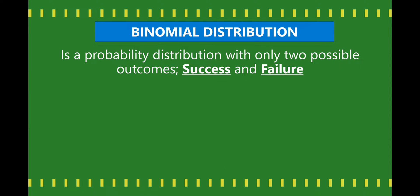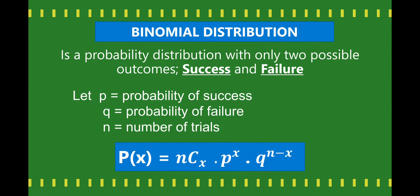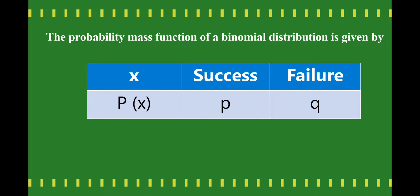Binomial distribution is a probability distribution with only two possible outcomes: success and failure. We let P be the probability of success, Q be the probability of failure, and n be the number of trials. The binomial distribution formula is: P(x) = combination of n and x, times P raised to x, times Q raised to n minus x. The probability mass function has x for success and failure, and P and Q, wherein the sum of P and Q equals 1, from the properties of discrete variables.